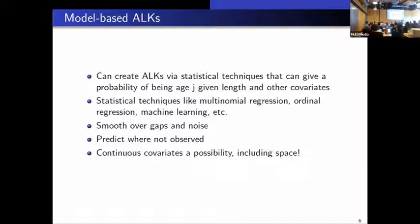So it's possible to create age-length keys using statistical techniques that can give probability of being age j given length or other covariates. So there's a number of ways this could be done, like multinomial regression, ordinal regression, some sort of machine learning, like classification and regression trees, or support vector machines. Model-based age-length keys have the ability to smooth over gaps and noise and predict where not observed, which is not possible with empirical or traditional age-length keys. And it also opens up the idea of putting in a continuous covariate like space.